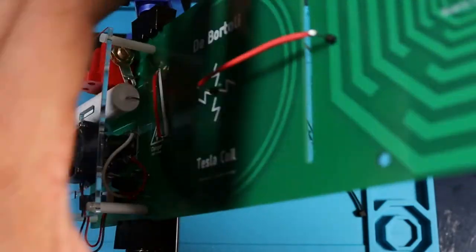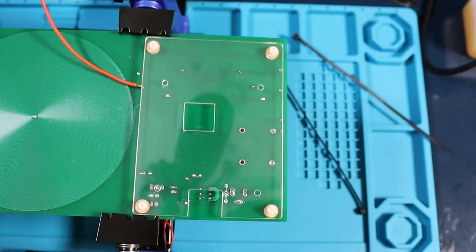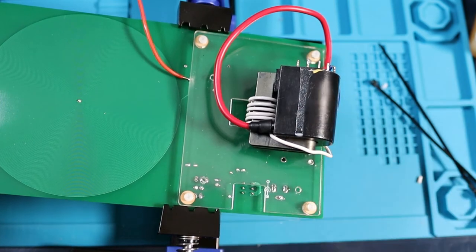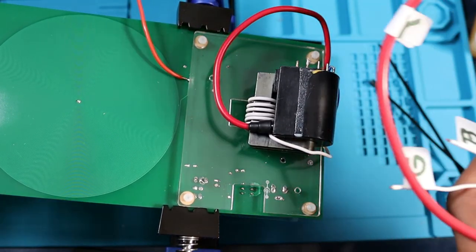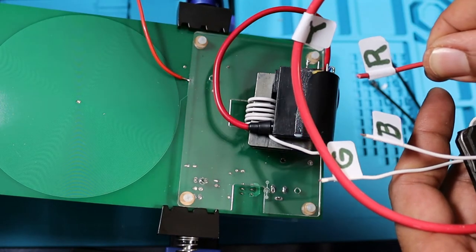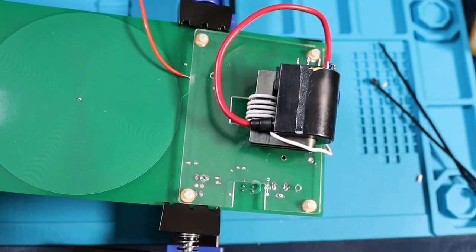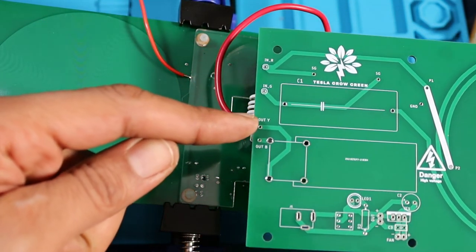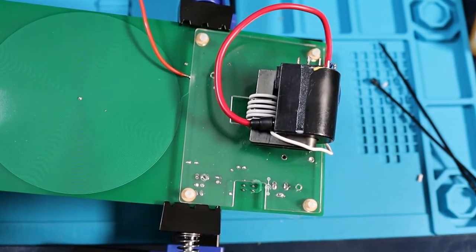So we're going to move ahead now. We're going to install flyback transformer. We have our flyback transformer soldered to the side. You will get in the kit similar to this, labeled to simply follow onto your board. In R, In G, Out Y, Out B to the flyback transformer.